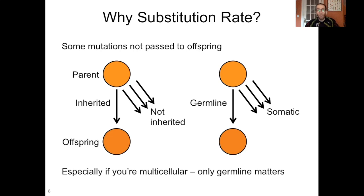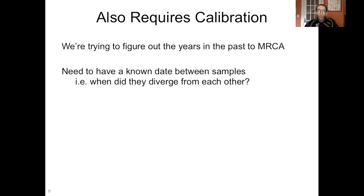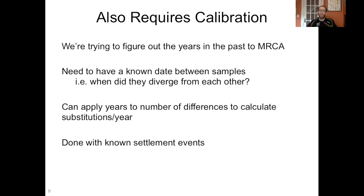This technique also requires calibration. We're trying to figure out the years in the past to the most recent common ancestor, and to do that we need to know the rate at which substitutions accumulate. So we look at samples that have differences with a known date between them — we know when these two things split apart. We calculate the number of substitutions between them, then use the number of years to calculate substitutions per site per year. Then we apply that rate to our larger sample to figure out the time to the most recent common ancestor.